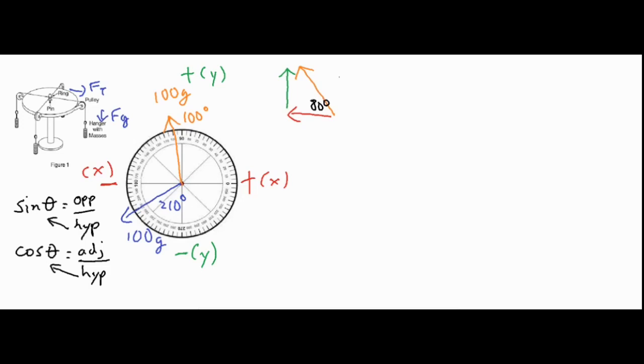For our hypotenuse of the triangle, it is going to be 0.1 kilograms times 9.8, because if we convert grams to kilograms we're going to divide by a thousand, which changes it to 0.1. And then we always do mg, mass times 9.8, to get the force of these hanging masses. We want that mass in kilograms, so we move the decimal place three places to the left.